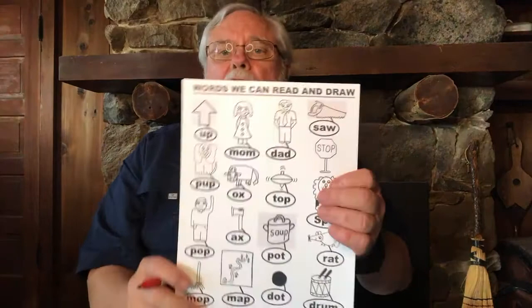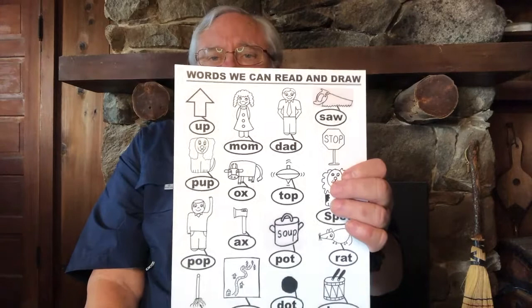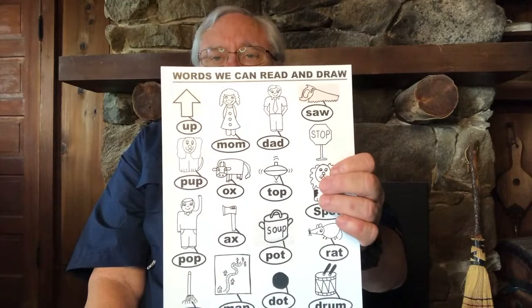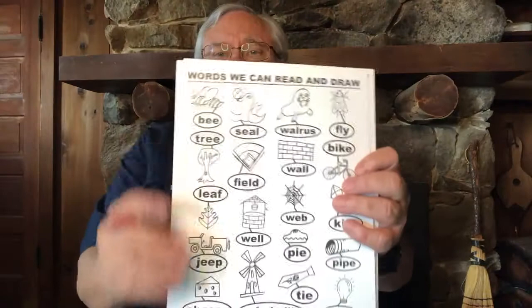Every time we draw something, it goes up on our drawing word wall. When we drew our picture of 'up,' here was an arrow with 'up' and our puppy. We're going to start putting these into pattern songs so children will have a complete text to read and write. Throughout the course of the year, we keep adding more and more pages to the drawing word wall.